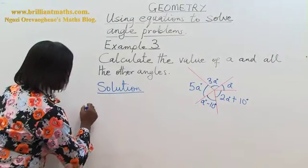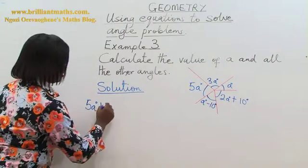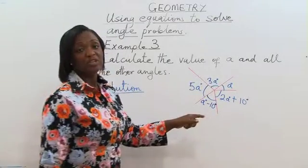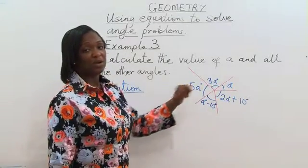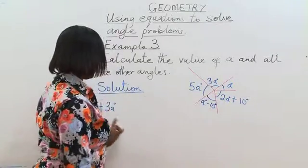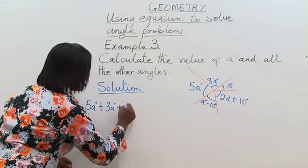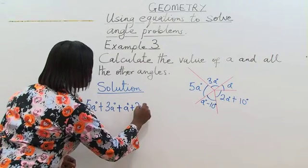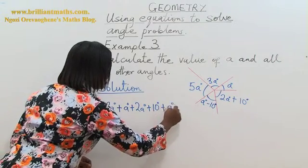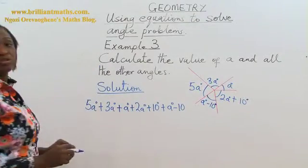So we have 5a degrees plus 3a degrees. When you have so many angles to add up, it's usually good to do it in a particular order so you don't miss out any of them. So I choose to go clockwise from 5a. So 5a degrees plus 3a degrees plus a plus 2a plus 10 plus a minus 10. Then all of them are equal to 360.